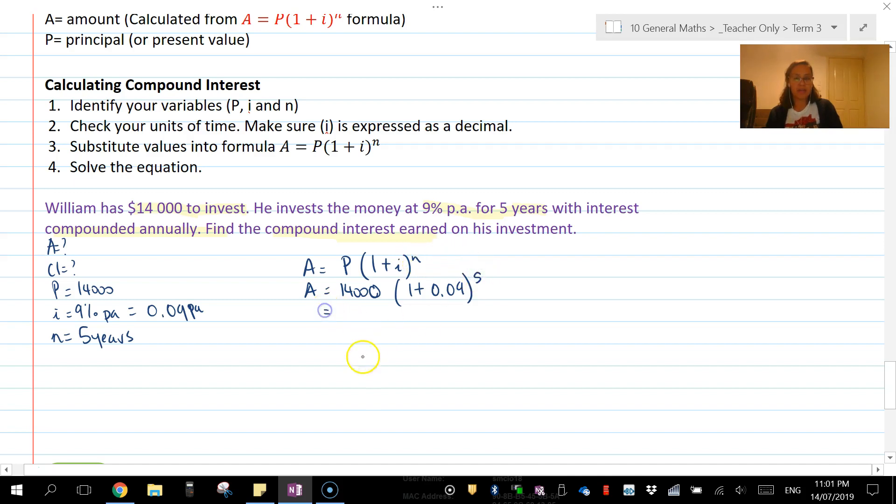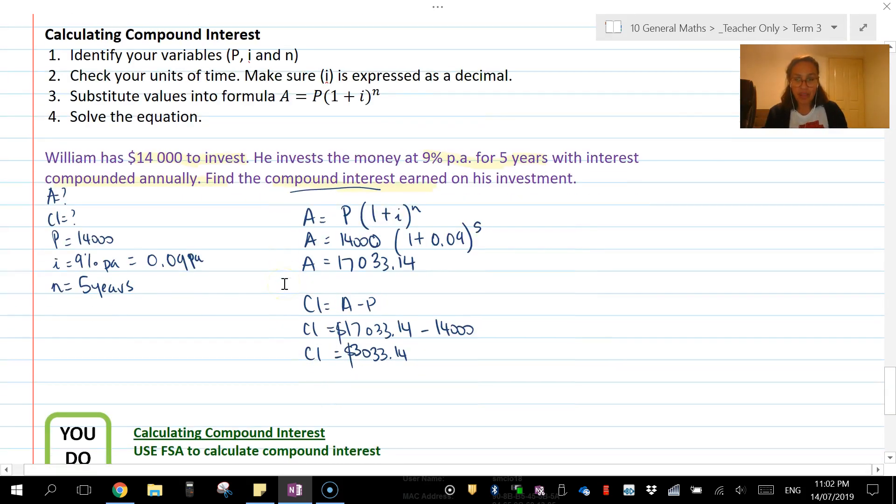Write out the formula: A = P(1 + i)^n. Your amount is not known, so you substitute in $14,000, (1 + 0.09)^5. The value is $21,533.14 - that is the interest plus the principal. We want the compound interest earned, so CI = A - P. The amount was $21,533.14 and P is your principal, so CI = $7,533.14.